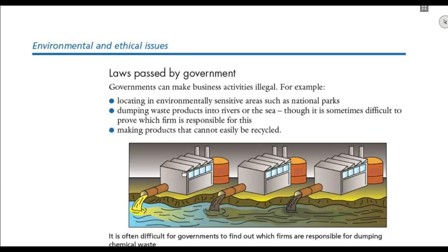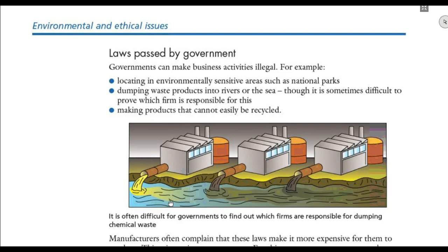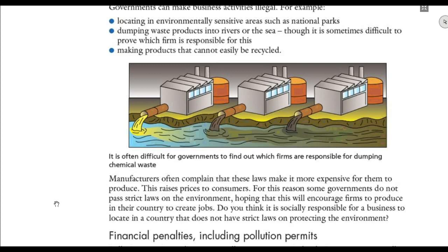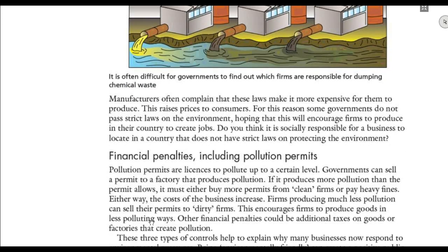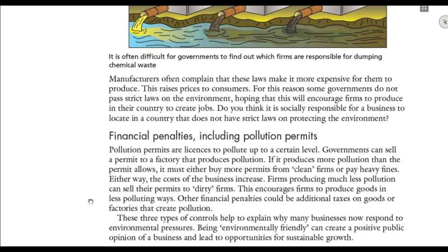The government itself passes many laws to protect the environment. It is illegal to locate businesses in new sensitive areas, to dump waste, or to make products that cannot be recycled. The government punishes businesses by requiring them to buy a pollution permit — a license that allows the business to pollute only up to a certain level — which increases their costs. The government can also make businesses pay heavy fines and additional taxes on goods produced by polluting factories.